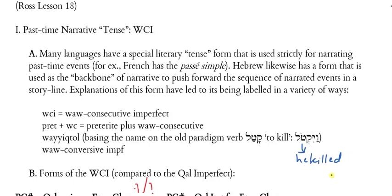Some grammarians talk about this as a vav conversive imperfect — that is to say the imperfect usually indicates things that are future, and when you have this special vav vowel pointing in front, it appears to convert it to a past-time form, so some call it a vav conversive. When I learned Hebrew I used the expression WCI for the form, and that's what I've used.